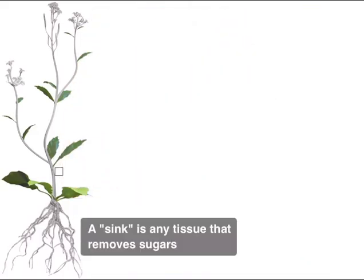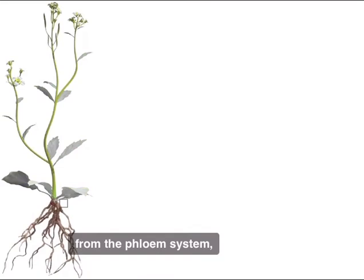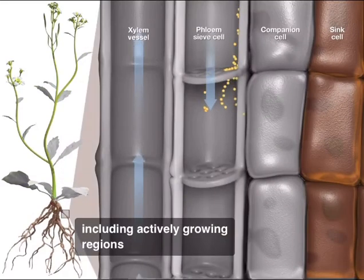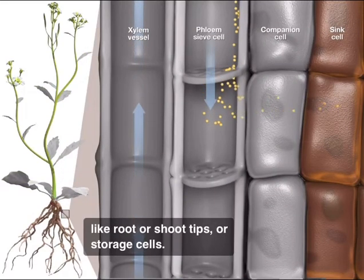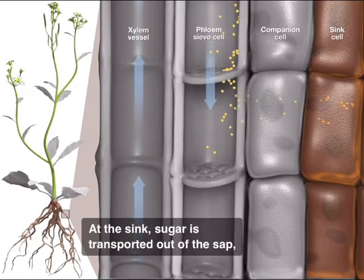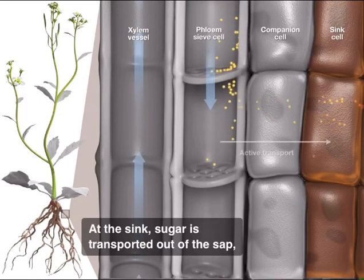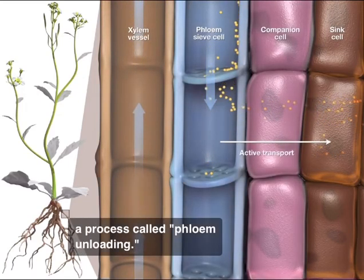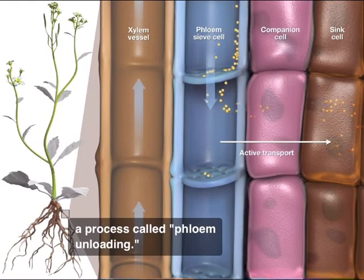A sink is any tissue that removes sugars from the phloem system, including actively growing regions like root or shoot tips or storage cells. At the sink, sugar is transported out of the sap, a process called phloem unloading.